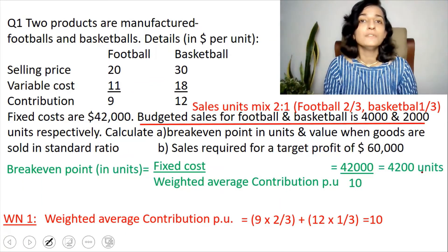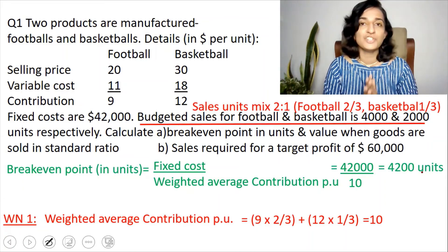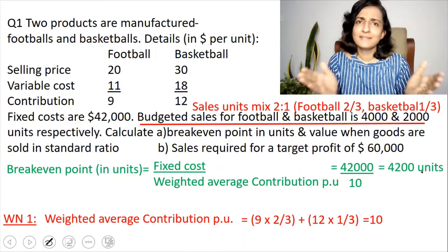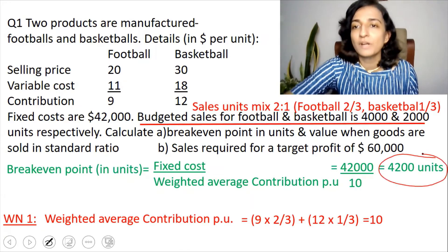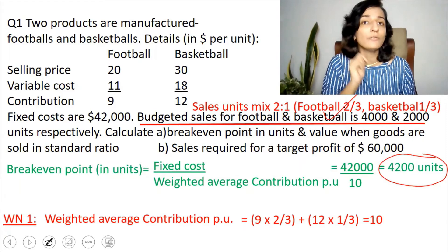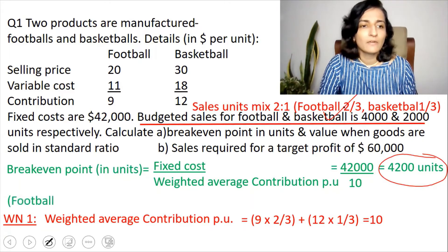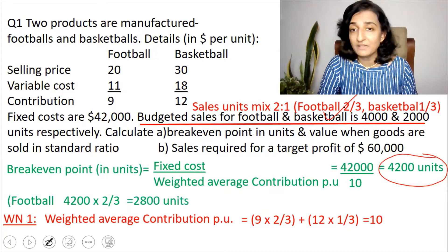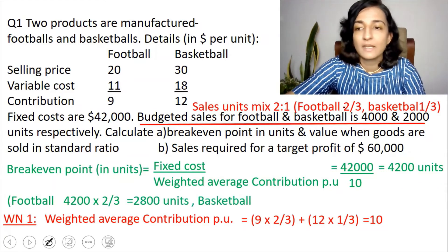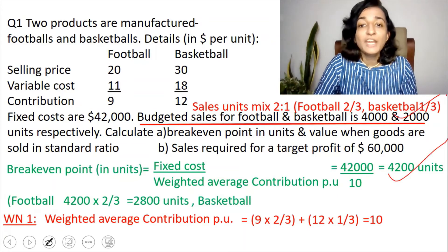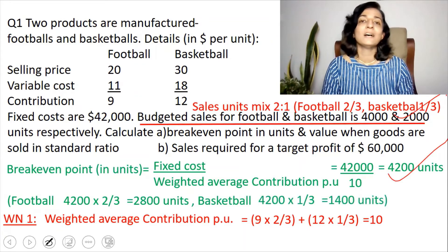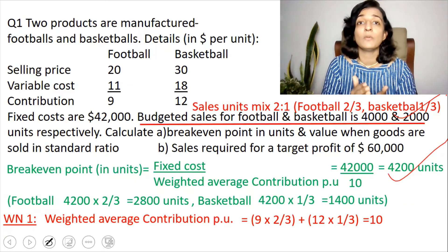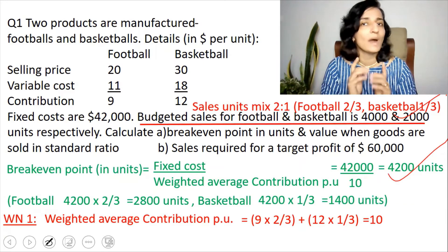To find how many footballs and basketballs to sell, apply the sales mix. Out of 4,200 total units, football is two-thirds: 4,200 × (2/3) = 2,800 units. Basketball is one-third: 4,200 × (1/3) = 1,400 units. This is how we find the break-even point when there is more than one product.